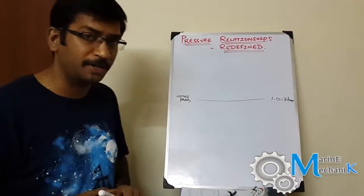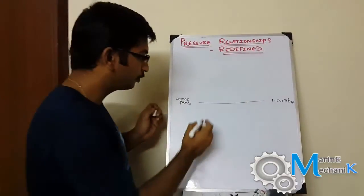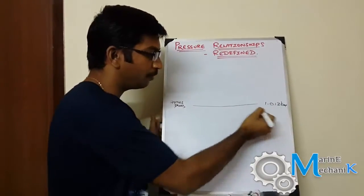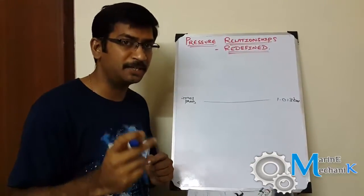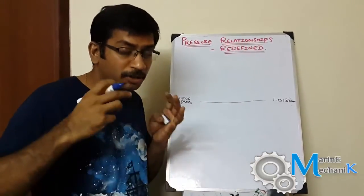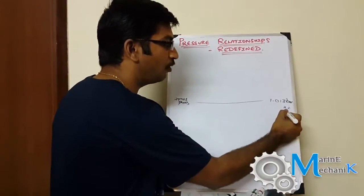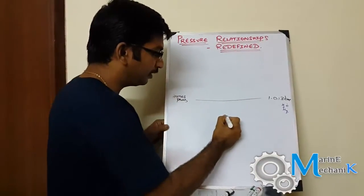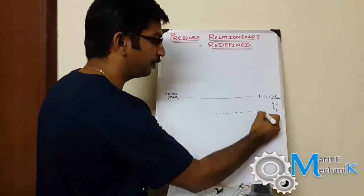Now I am going to drop the pressure below atmospheric, which means we are going into a partial vacuum state. When the pressure drops from atmospheric, the drop is very minimal, so we need a more precise unit — either mmH₂O or mercury — to measure the amount of vacuum. Let's assume the pressure drops to this point here, which represents a partial vacuum state.